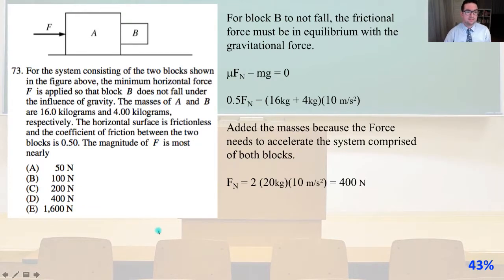73. For the system consisting of the two blocks shown in the figure above, the minimum horizontal force F is applied so that block B does not fall under the influence of gravity. The masses of A and B are 16 kilograms and 4 kilograms, respectively. The horizontal surface is frictionless and the coefficient of friction between the two blocks is 0.5. The magnitude of F is most nearly. So for block B not to fall, the frictional force must be in equilibrium with the gravitational force.